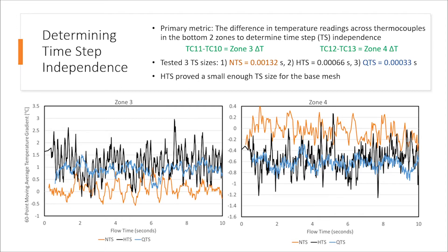Two thermocouple values are used per zone to calculate a difference in temperature readings between the top and bottom of the zone. That value then communicates the current state of the model and how different settings are affecting the models in development. Our models used three time step sizes: normal time step, half time step, and quarter time step, with the corresponding values shown. The plots show that the overall average temperature gradient in zones 3 and 4 did not change when reducing down to the quarter time step size. Because we want to run the largest possible time step size, half time step was selected for all models running on the base mesh of 6 million elements. As we refine the mesh, the time step is decreased to ensure a low Courant number.